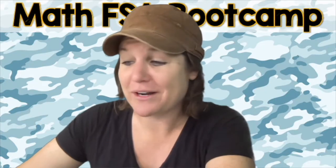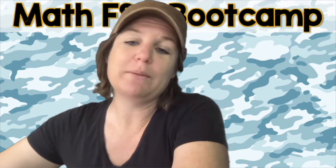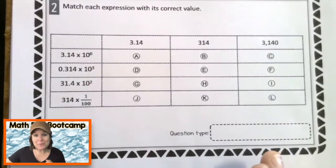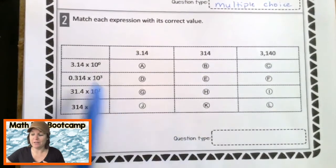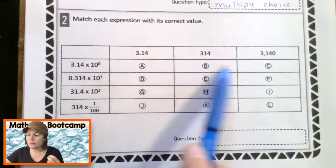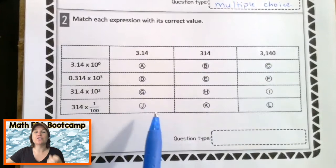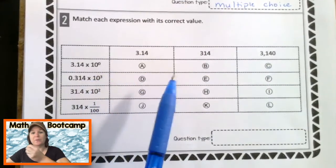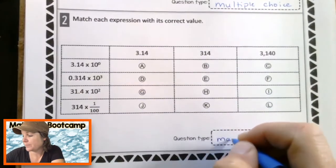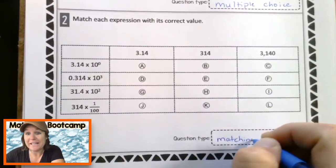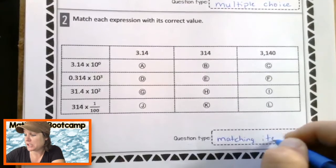All right, let's go ahead and take a look at number two. Right away, let's knock out the question type here. We've got rows and we've got columns. And our job is to match each row with the correct column. So this is a matching item question. I actually really like these types of questions, matching item.